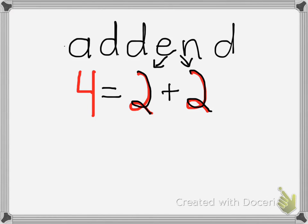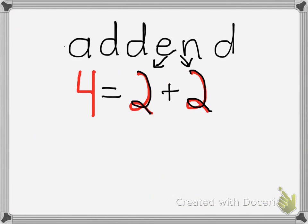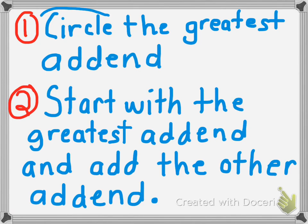Let's go ahead and review the steps for today's lesson. Remember, we are going to practice addition by counting from the greatest addend. Here are today's steps: the first step is to circle the greatest addend. The next step is to start with the greatest addend and add the other addend.